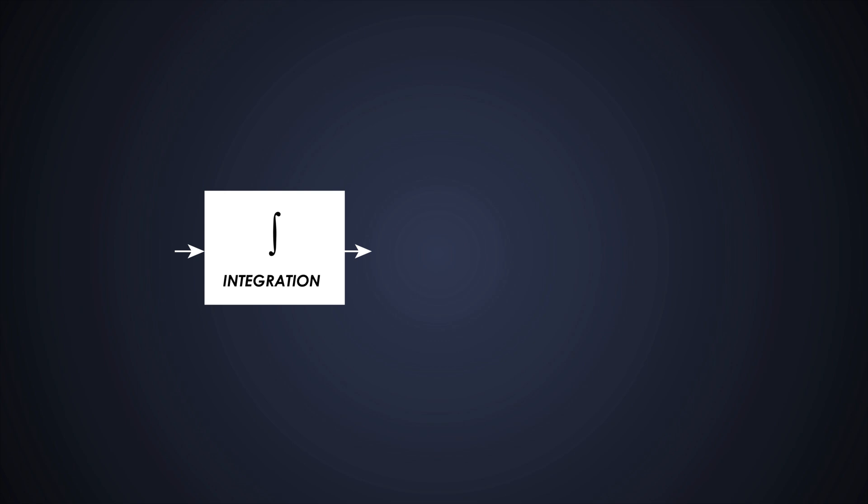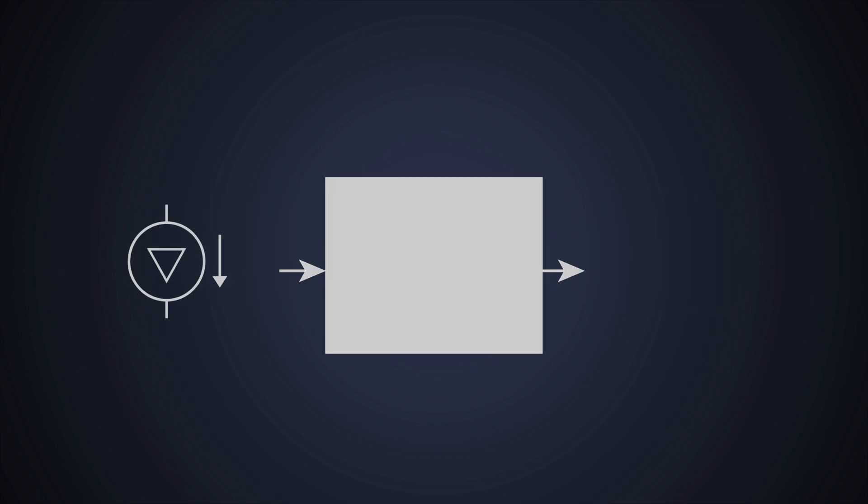Remember the last time we discussed how an op-amp can perform calculus operations like integrations. Today we'll explore how an op-amp can convert current to voltage using a trans-impedance amplifier.